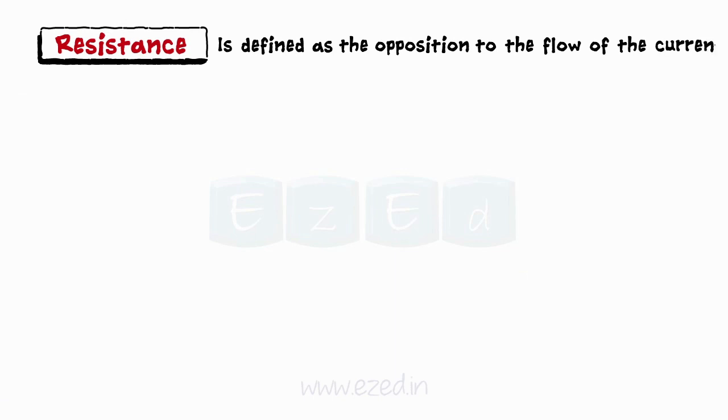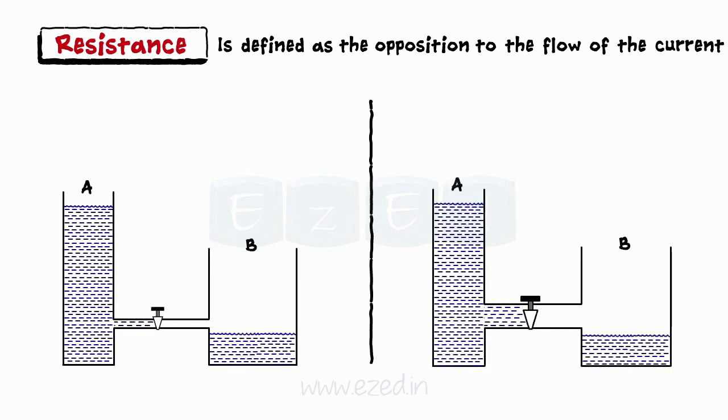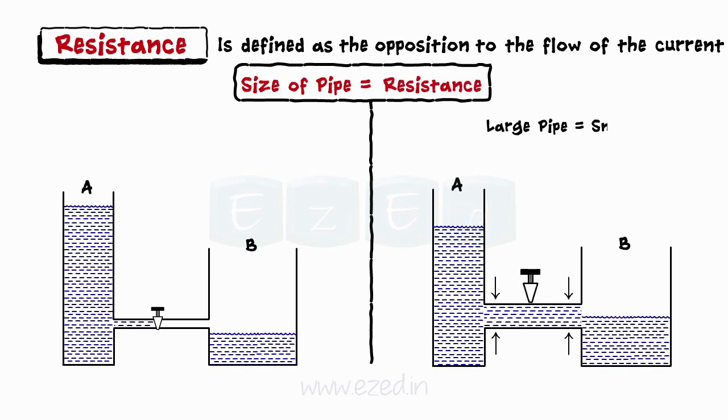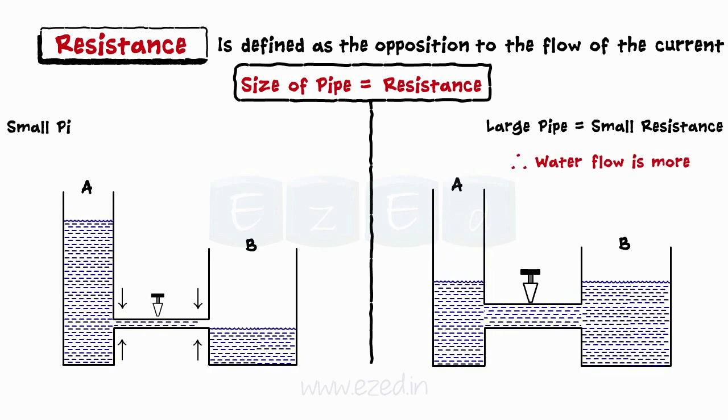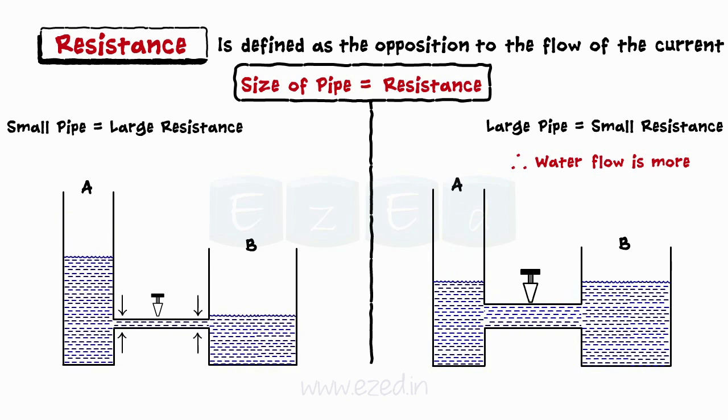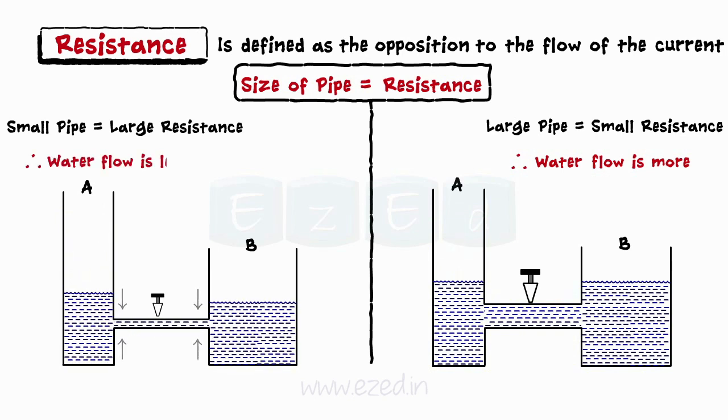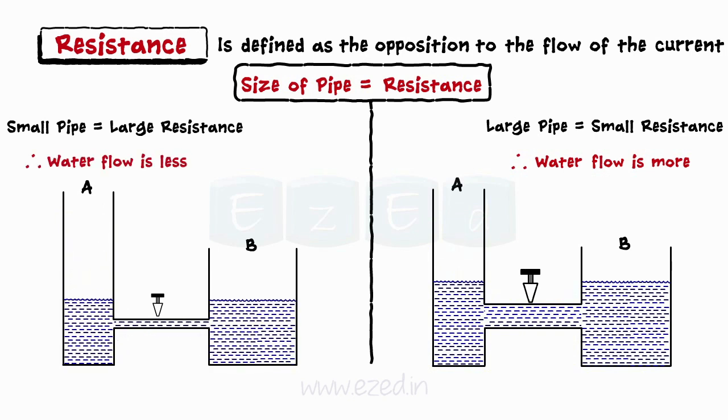The next term is the resistance, which means the opposition to the flow of the current. Let's go back to the water analogy. Change in the size of the pipe changes the intensity of the water flow. Larger the pipe, smaller is the opposition. Hence, the water flow is more. Whereas, narrower the pipe, water experiences more resistance and the flow reduces. All the devices, including a simple wire, possess the resistance. The unit of resistance is Ohm.